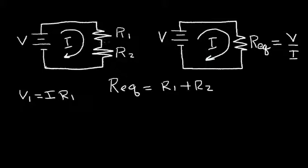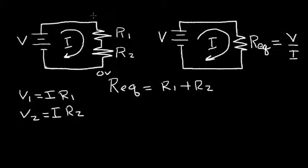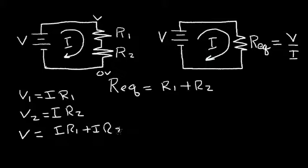Now I can calculate the voltage drop across R2. We'll call that V2, which is equal to the same current I times R2. So the total voltage — if we have zero volts here and we have voltage V here — the total voltage V is equal to the sum of V1 and V2, which is IR1 plus IR2.